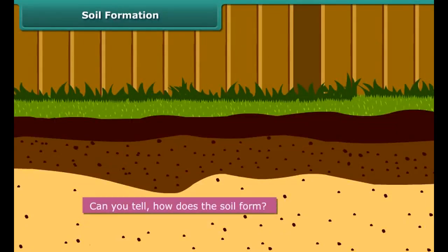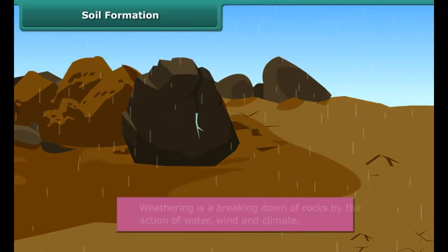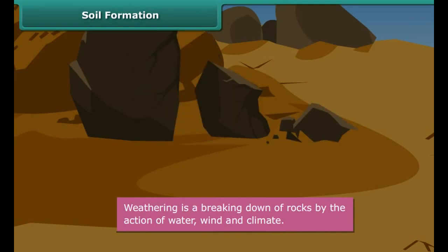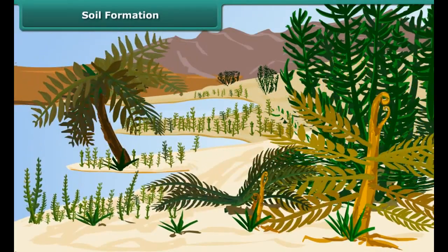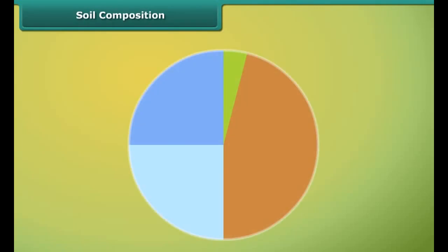Can you tell how does the soil form? Well, soil was formed over a very long period of time. Large rocks were broken down into smaller pieces, and finally to soil, by the action of wind, water and climate in a process called weathering. Also, decaying of dead plants and remains of animals made the soil thick and rich and eventually it became support for life.